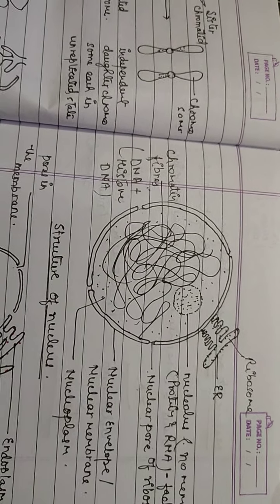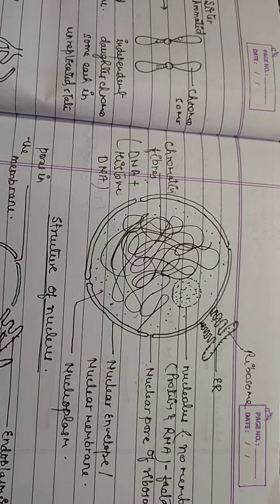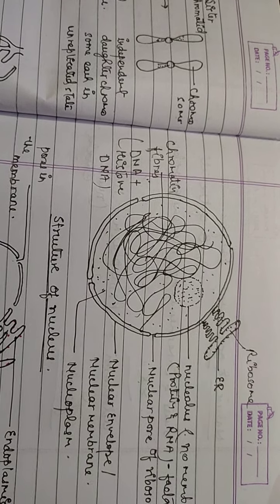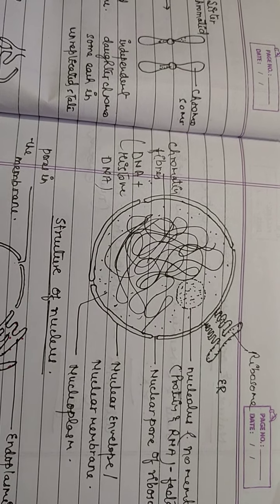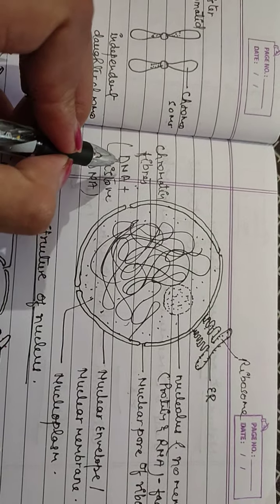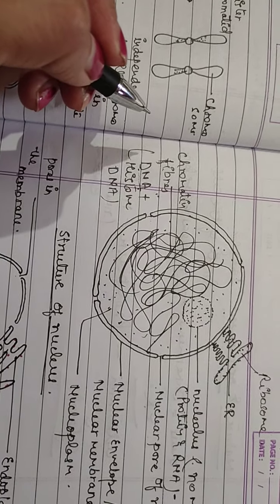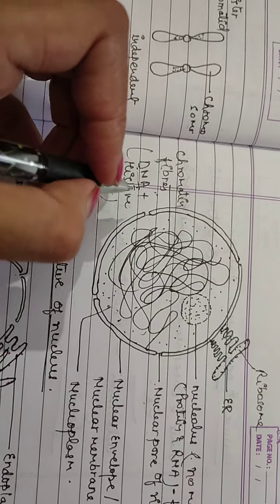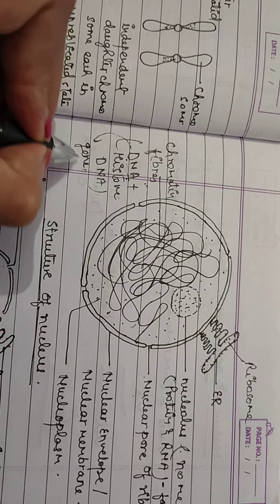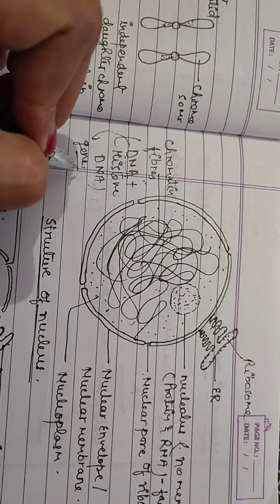DNA stores all information necessary for the cell to function, grow, and reproduce. It carries information from one generation to another. Distinct segments of DNA are called genes — they are the functional parts of DNA transferred from one generation to the next, and are also called hereditary units.